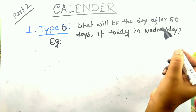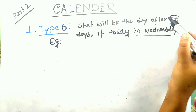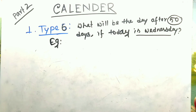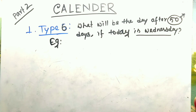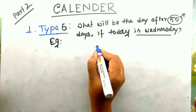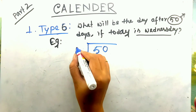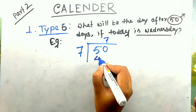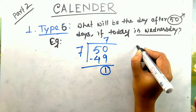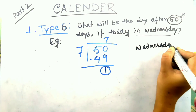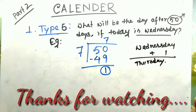The sixth type is: what will be the day after 50 days if today is Wednesday? This is the easiest type. 50 days are given, so just divide by 7: 7 sevens are 49, remainder is 1. Add 1 to Wednesday — Wednesday plus 1 is Thursday. So your answer is Thursday.